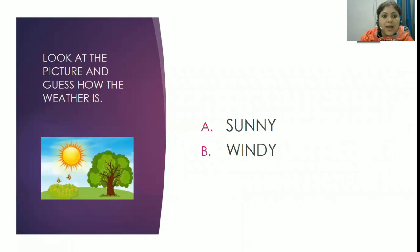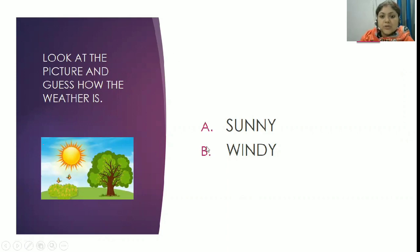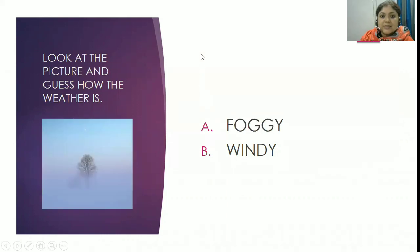Next question. Look at the picture and guess how the weather is. Option A: sunny. Option B: windy. We can see the bright sun in the picture, so the correct answer is Option A — weather is sunny.